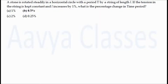We'll see the next problem. A stone is rotated strictly in a horizontal circle with time period T by a string of length L. If the tension in the string is kept constant and L increases by 1%, what is the percentage change in time period? Basically, you have to calculate the percentage change in time period if the length L of the string is increased by 1%.